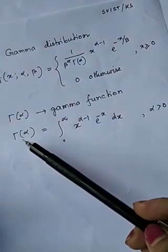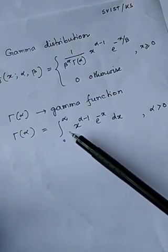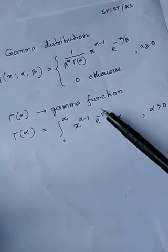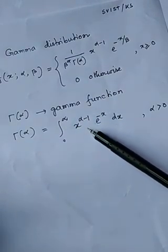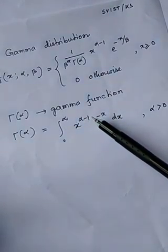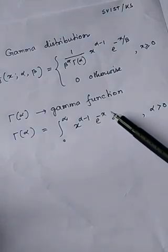The gamma function is defined as the integral from 0 to infinity of x to the power alpha minus 1, times e to the power minus x, dx.